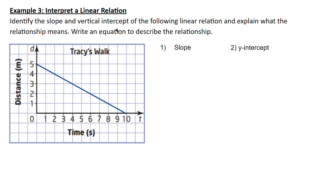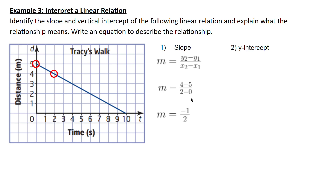Now we want to identify the slope and vertical intercept of the following linear relation and explain what the relationship means. Keep in mind that Tracy's walk is a function of distance and time. We need to find our slope and y-intercept, starting by identifying any two points on the graph. The points chosen are (0, 5) and (2, 4). Finding the slope gives us 4 minus 5 over 2 minus 0, which is negative 1 over 2, or negative one half.